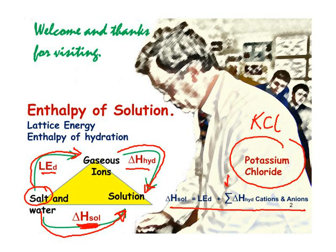This symbol stands for 'sum of.' So the enthalpy of solution is the lattice enthalpy of dissociation plus the sum of the enthalpies of hydration of the cation — which in this case is potassium — and the anion — which in this case is chloride.